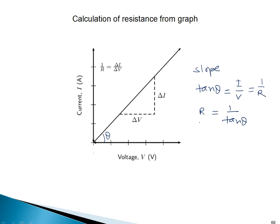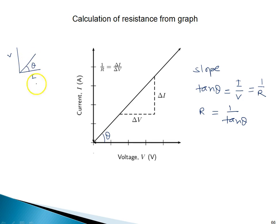If the graph is between V on the x-axis and I on the y-axis, then in this graph the slope tan θ will be the resistance directly.